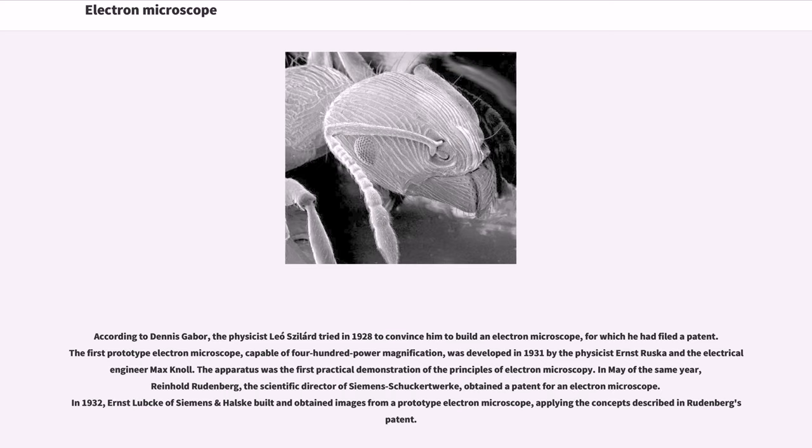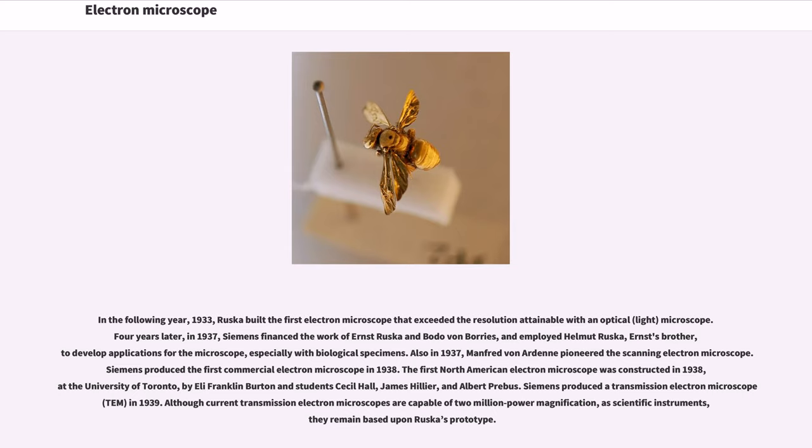Electron Microscopes. In 1926 Hans Busch developed the electromagnetic lens. In May of the same year, Reinhold Rudenberg, the scientific director of Siemens Schuckertwerke, obtained a patent for an electron microscope. In 1932, Ernst Lubbock of Siemens and Halske built and obtained images from a prototype electron microscope, applying the concepts described in Rudenberg's patent. In the following year,